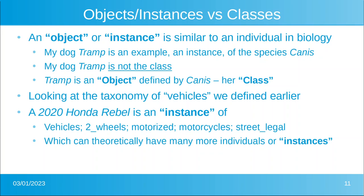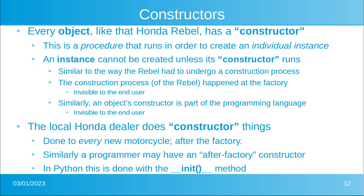So far we've talked about object, instance, class, and inheritance. Now, every object — like a Honda Rebel — has what's called a constructor procedure. This is a procedure that must run in order to create an individual instance. My hypothetical motorcycle cannot be created unless the constructor runs — similar to how the factory had to go through a construction process, which happens invisibly to the person who buys the motorcycle.